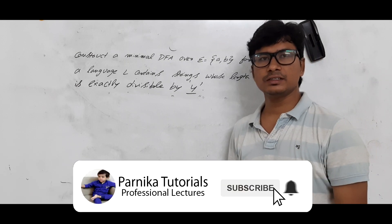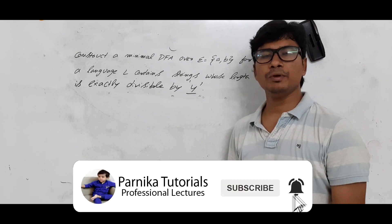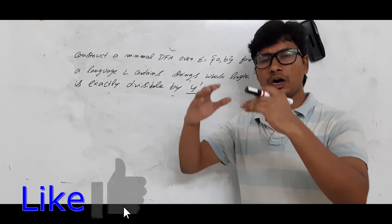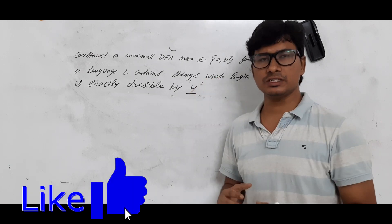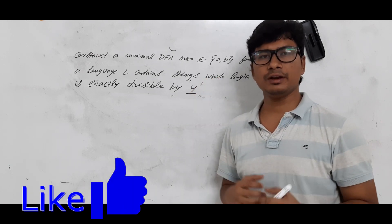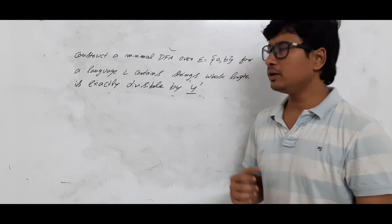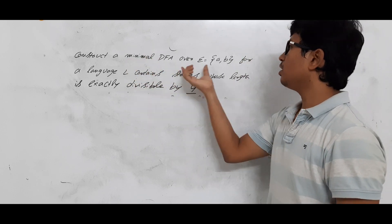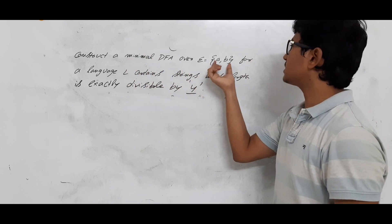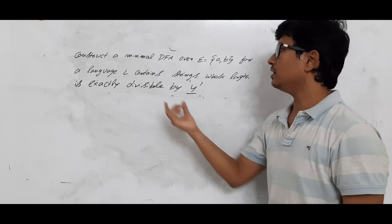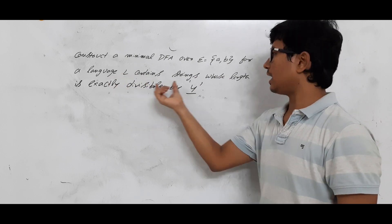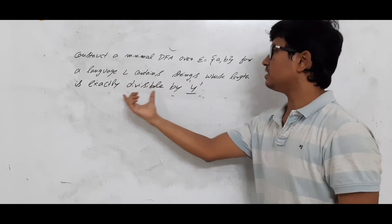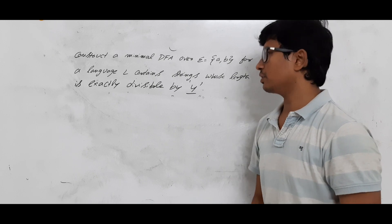Good morning friends. I hope everyone is doing well. I request everyone to watch my videos in a sequence for better understanding. Let me read out the question: Construct a minimal DFA over alphabets A and B for a language L that contains strings whose length is exactly divisible by 4.